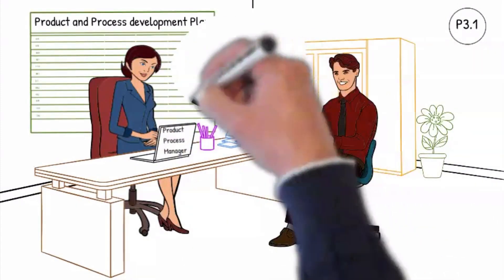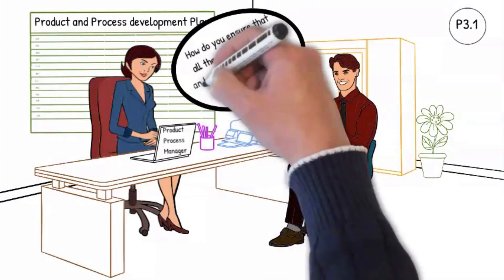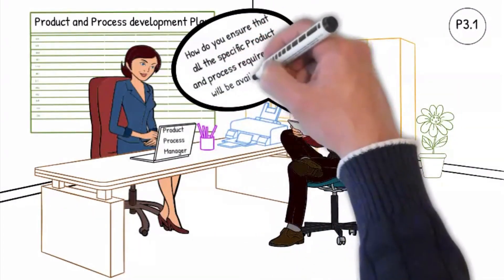P3.1. How do you ensure that all the specific product and process requirements will be available and implemented?